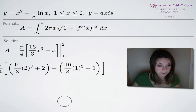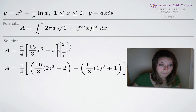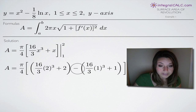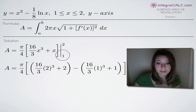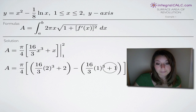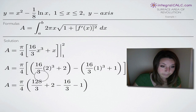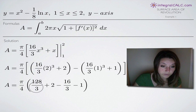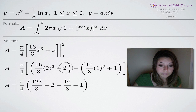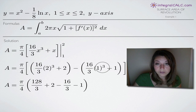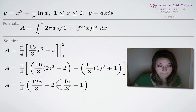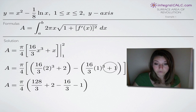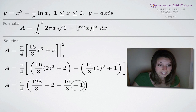For a definite integral, we plug in the top number 2 first, subtract, then plug in the bottom number 1. With pi over 4 out front: plugging in 2, we get 128 over 3 plus 2; plugging in 1, we get 16 thirds plus 1. So we have pi over 4 times the quantity 128 over 3 plus 2, minus 16 thirds minus 1.